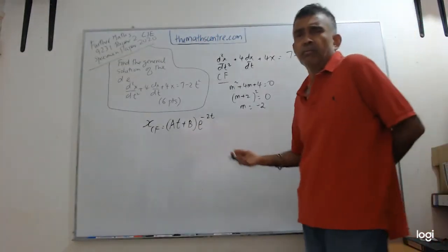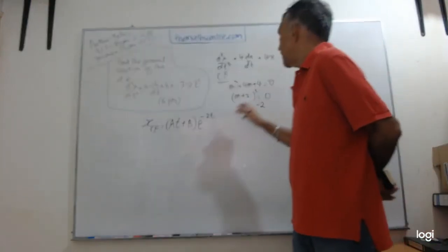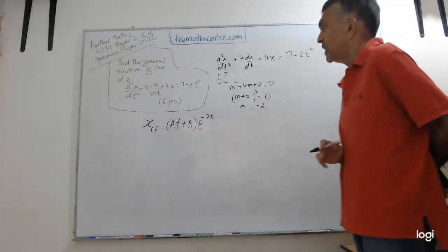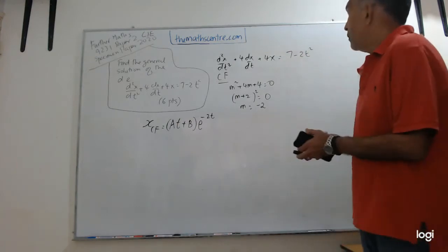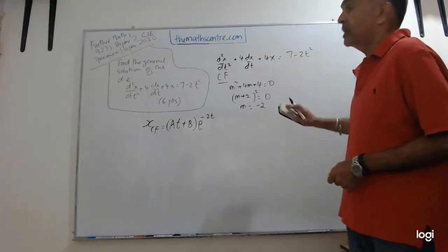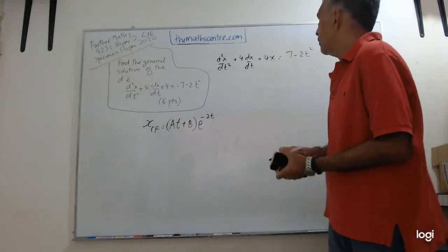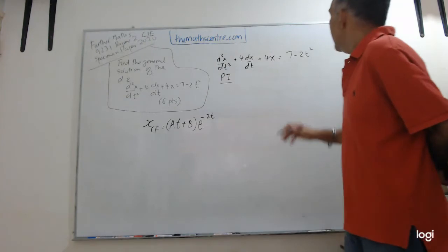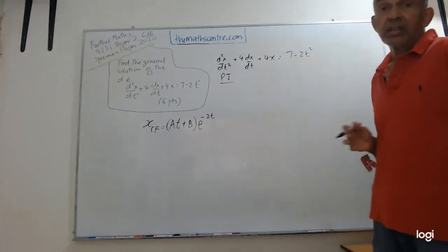We are dealing with a repeated root, therefore this is my complementary function: (At + B)e^(-2t), where A and B are constants. Once we're done with that, we need to work out our particular integral. For the particular integral, we are looking at the right-hand side of the equation.